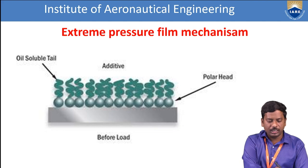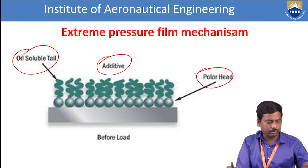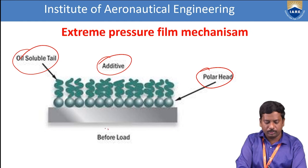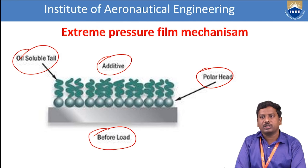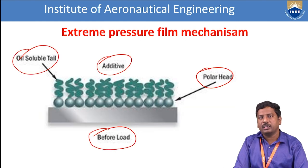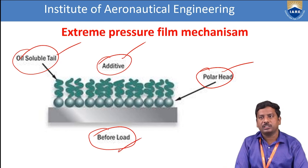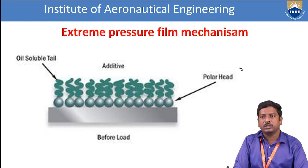Looking at the diagram for extreme pressure lubrication: at the top left we observe the oil-soluble tail, at the center we observe the additives, at the right side we observe the polar head, and at the bottom we observe the load-bearing capacity. To summarize, the three overall types of mechanisms are: thick film mechanism, thin film mechanism, and extreme film mechanism.